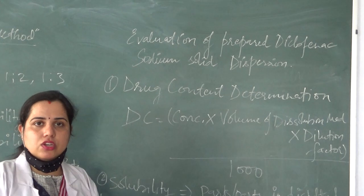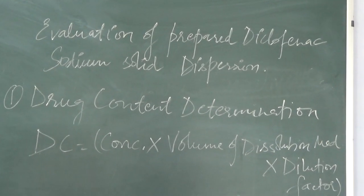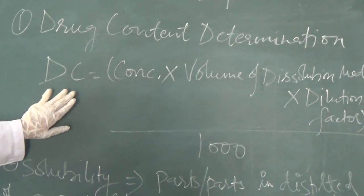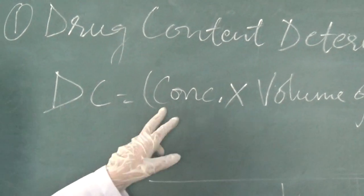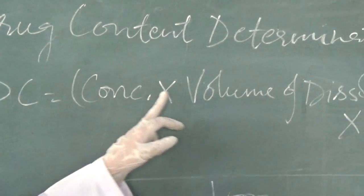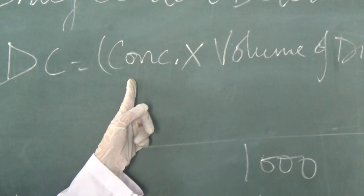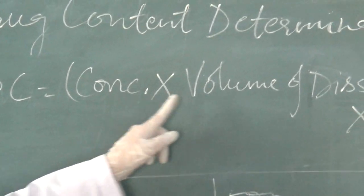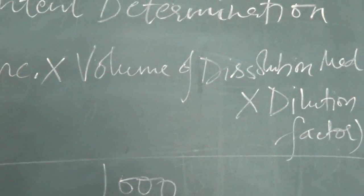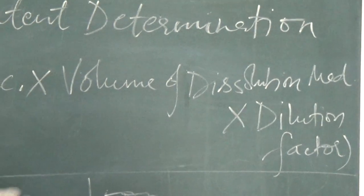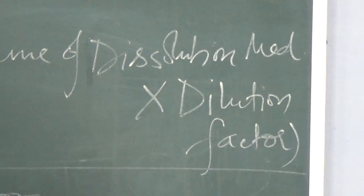As you have done for making standard or calibration curve, different dilutions you make to analyze the concentration in the particular solution. Here we can take drug content formula: concentration, volume of dissolution medium - that means how much volume, 900 ml dissolution medium we take - and dilution factors, that means sink condition maintenance.